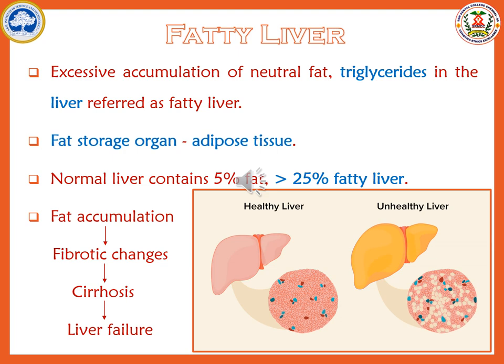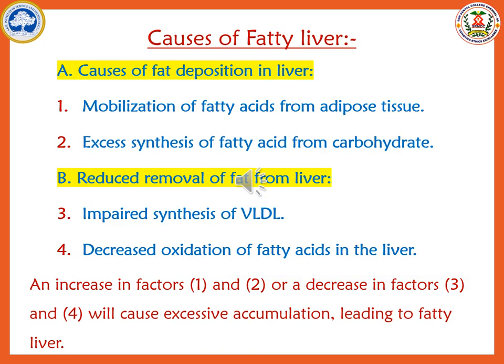There are two major causes for fatty liver. First is increased deposition of fat in the liver, and second is reduced removal of fat from the liver. For the first cause, increased fat deposition may be due to: one, excessive mobilization of fatty acids from adipose tissue — when there is excess mobilization, fatty acids accumulate in the liver; and two, excess synthesis of fatty acids from carbohydrates — when you consume excess carbohydrates, they are automatically converted into fatty acids that accumulate in the liver, leading to fatty liver.